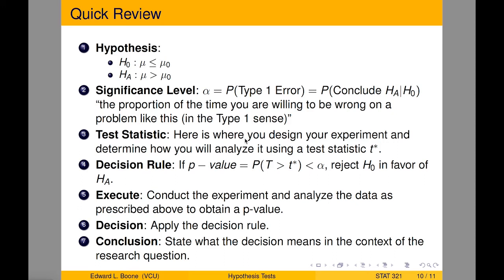The test statistic is what we've been talking about. This is how we're going to take that data and turn it into a probability. The decision rule is saying if we get a p-value, which is equal to the probability that our test statistics is greater than the actual one observed, if it's less than alpha, then we reject in favor of H0 or in favor of HA.